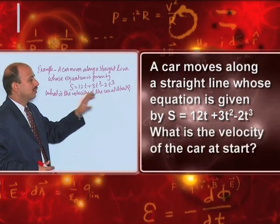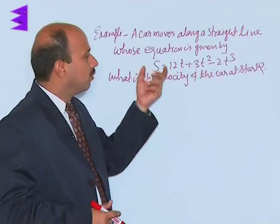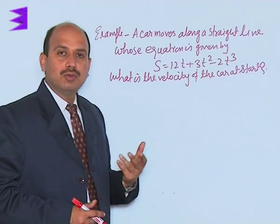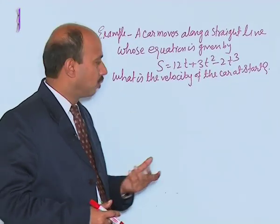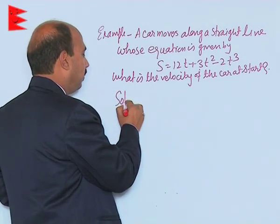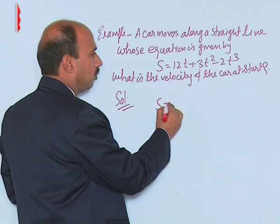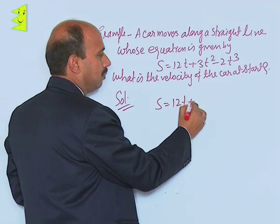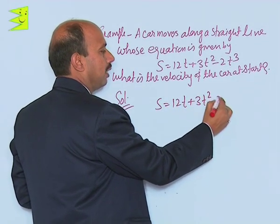What is the velocity of the car at start? See here for calculating instantaneous velocity, we have to use differentiation process, that means calculus. Here simply it is very simple, you write down s is equal to 12t plus 3t square minus 2t cube.